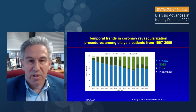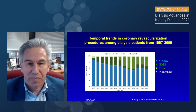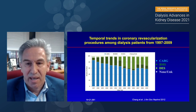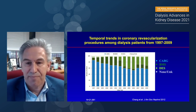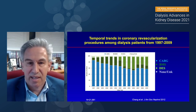Looking at temporal trends in coronary revascularization procedures among dialysis patients from 1997 to 2009, as time has gone on there's a higher prevalence of patients using stents. The drug-eluting stents in light green particularly increased over time. Bare metal stents in dark green stayed stable but decreased from the early 2000s. The percentage of patients undergoing CABG has decreased in comparison with stent use. This is the epidemiology of how patients are being managed when they undergo coronary revascularization.